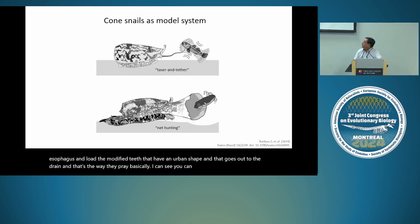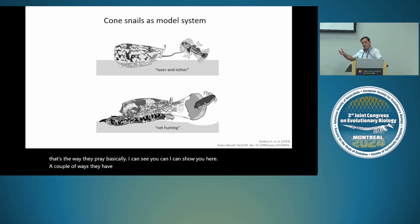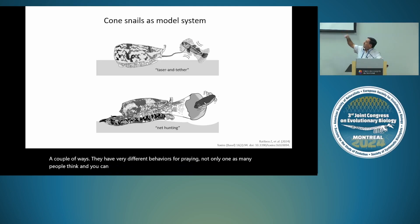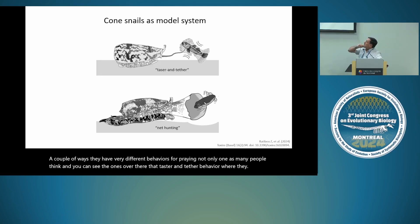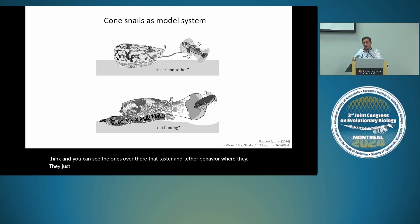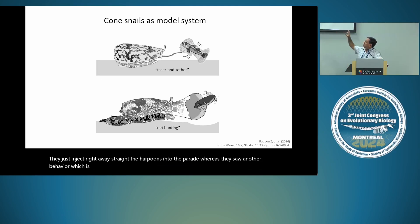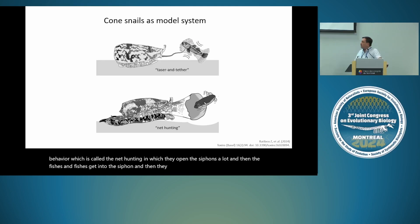They have very different behaviors for preying, not only one as many people think. There is the taster and tether behavior, where they inject the harpoons directly into the prey. There is also the net hunting behavior, in which they open the siphon a lot and the fish get into the siphon. The venom is there to paralyze the prey.